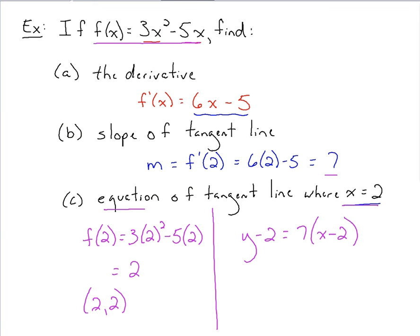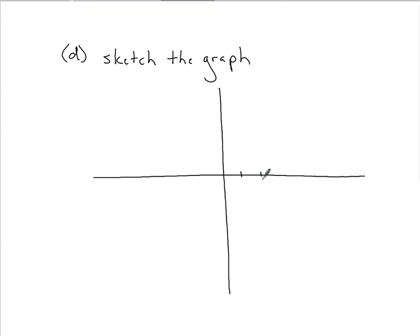Some of the key pieces that we want to identify as we sketch out this graph, we want to identify where our point's at, because that's our tangent point. That point's going to be a part of the tangent line, it's going to be a part of the curve. So it'd be helpful to plot that out. And we know there's going to be a tangent line going through that point, we know what the slope is, so we could count out the slope, we could find another point, we could draw that line.